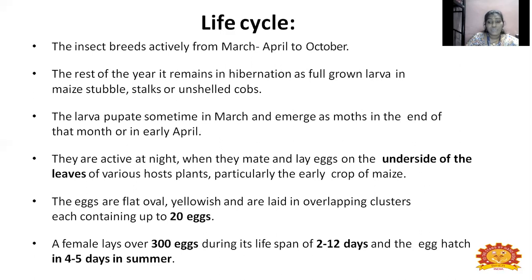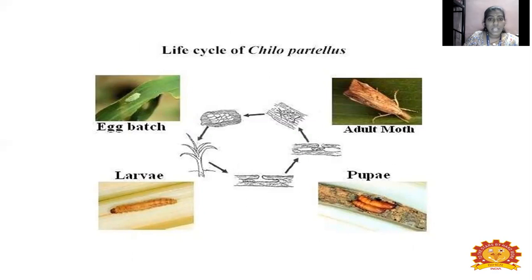Here is a picture of the life cycle of stem borer, Chilo partellus. You can see the clusters of eggs laid as a batch, from which larvae emerge — dirty grayish-whitish in color with the longitudinal line. Then it becomes a pupa, and the next stage is the adult moth.